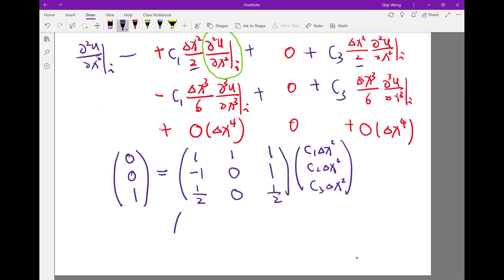So the solution to this is C1, C2, C3, all of them multiplied by delta x square, is equal to 1, minus 2, and 1.